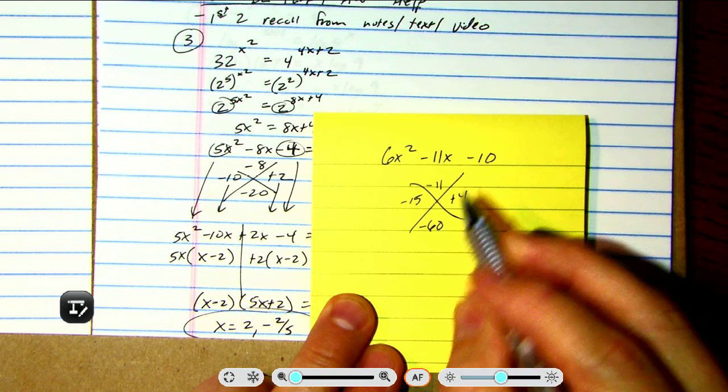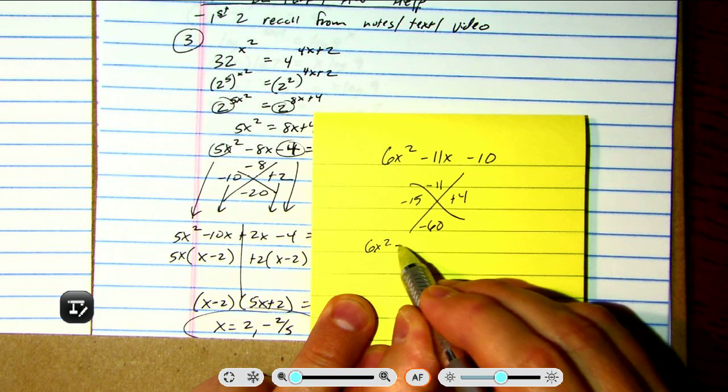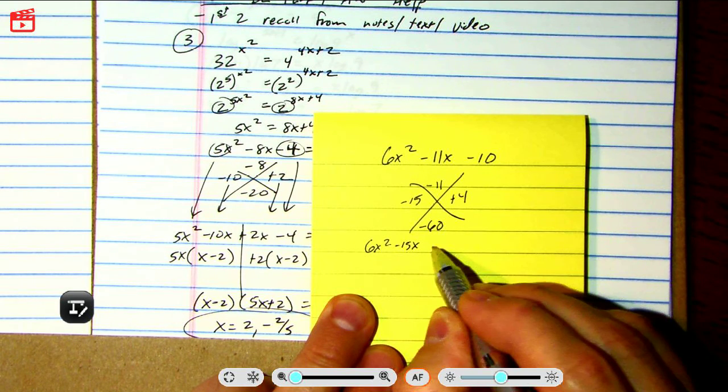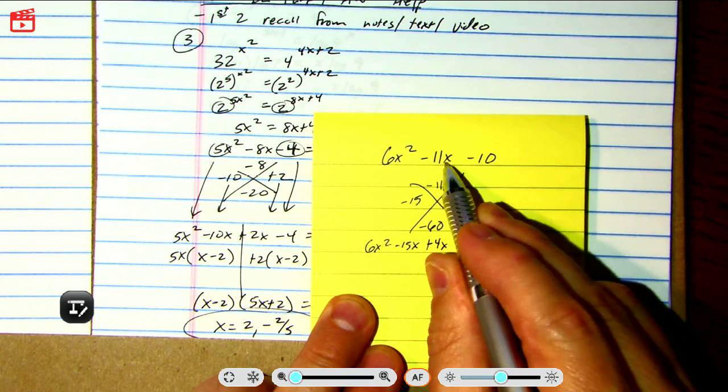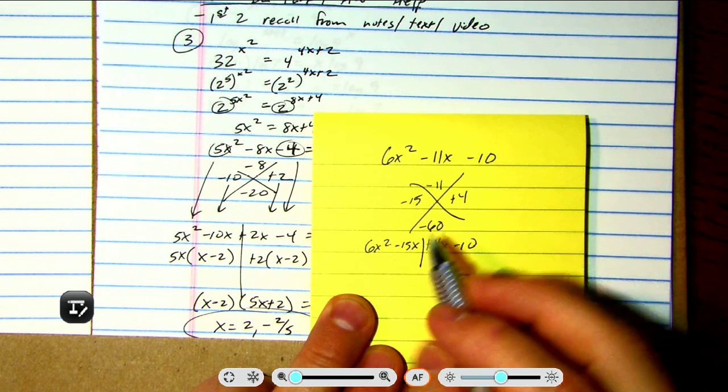So I'm just going to rewrite those to make the negative 11x, bringing down everything: 6x squared minus 15x plus 4x, that's how I get to negative 11, and then minus 10. And let's factor by grouping.